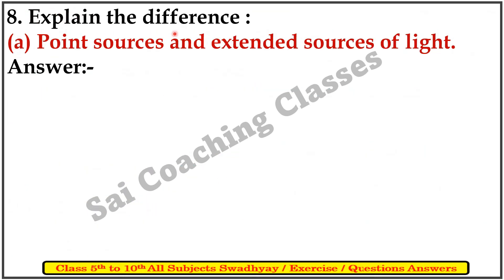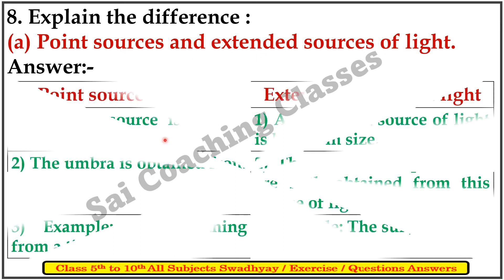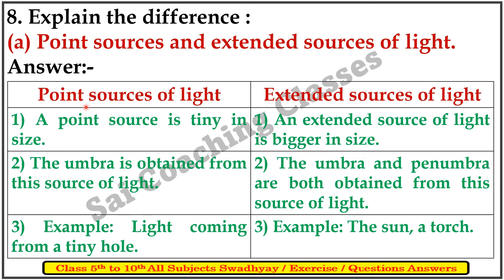Explain the difference between a point source and an extended source of light. A point source of light is tiny in size, whereas an extended source of light is bigger in size. Only umbra is obtained from a point source of light, while both umbra and penumbra are obtained from an extended source of light. Examples: light coming from a tiny hole is a point source; the sun or a torch is an extended source.